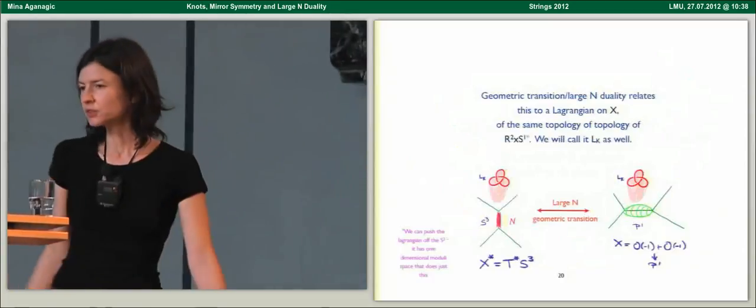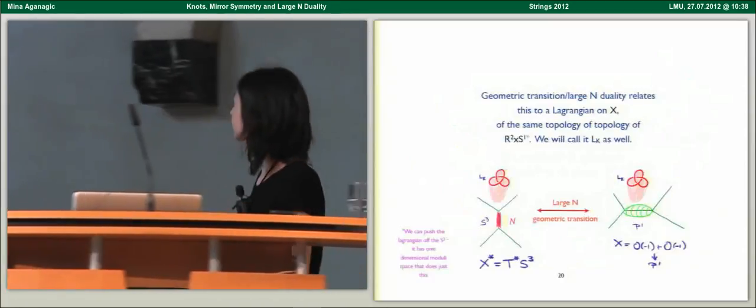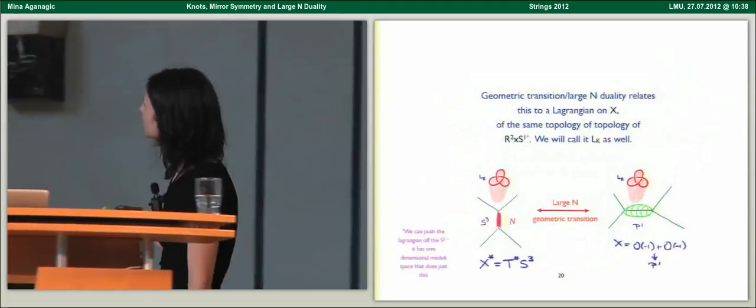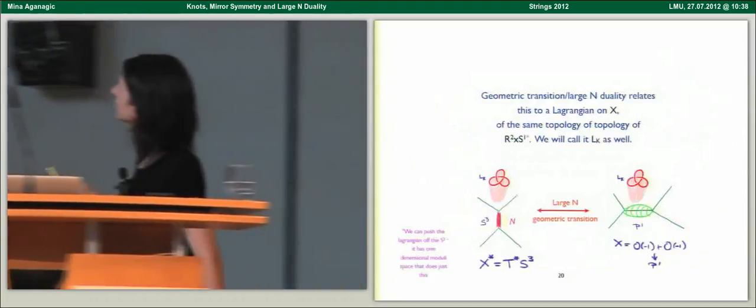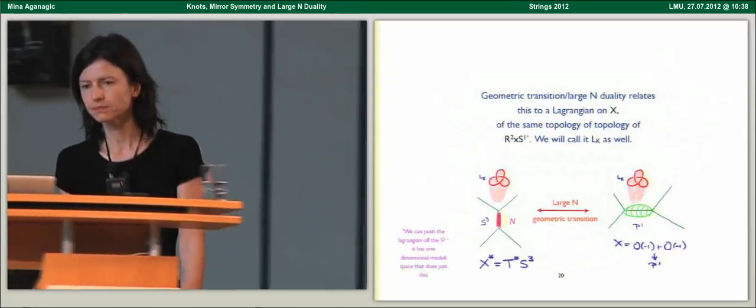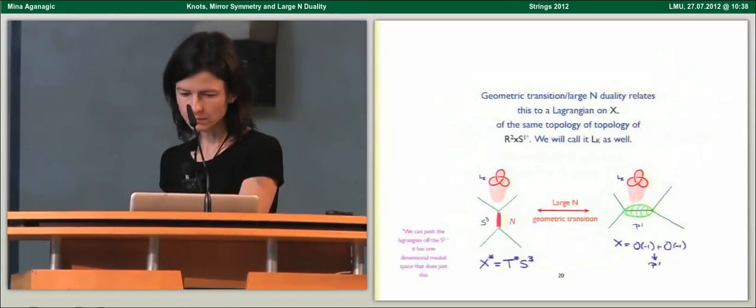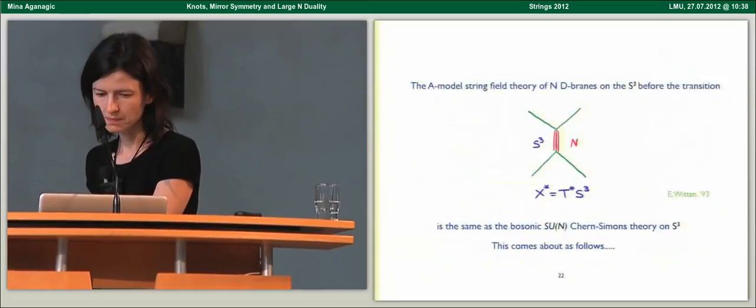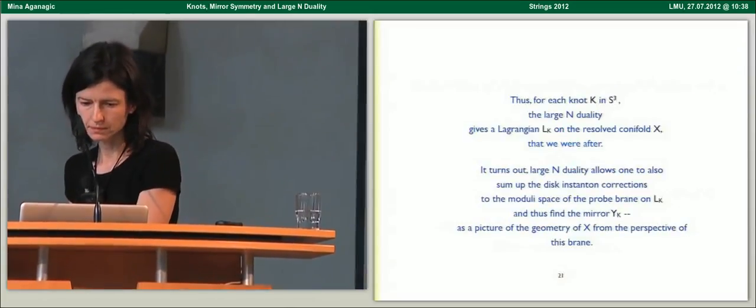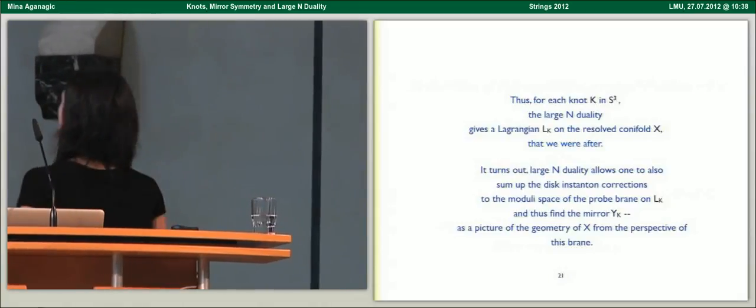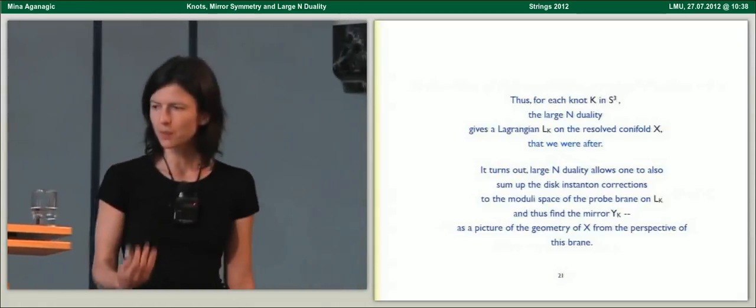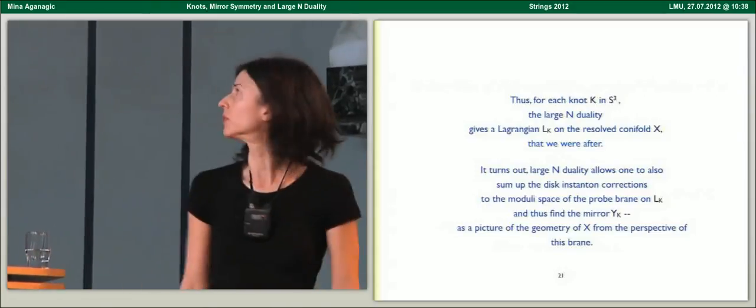You simply take the Lagrangian to intersect the S3 along the knot and extend in two directions normal to the S3. This way, the S1 is the knot itself. Geometric transition or large N duality will relate this to a Lagrangian after the transition of the same topology. For each knot in S3, large N duality gives you a Lagrangian of the topology we need on the resolved conifold.